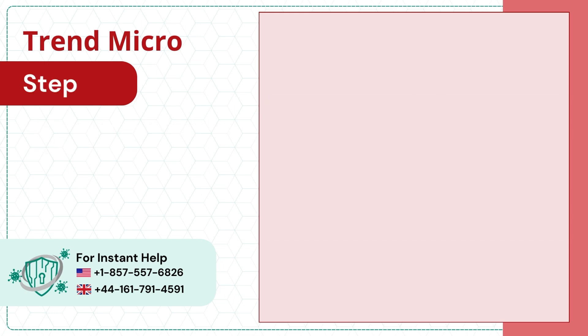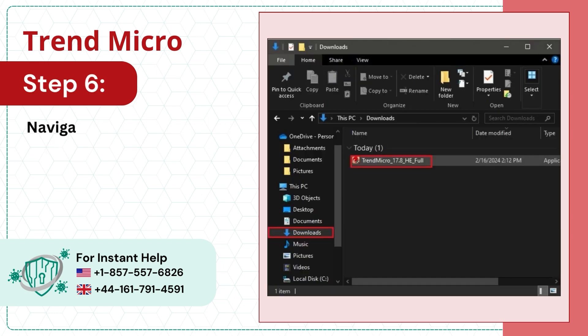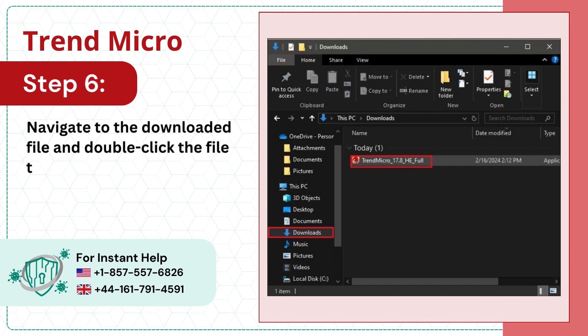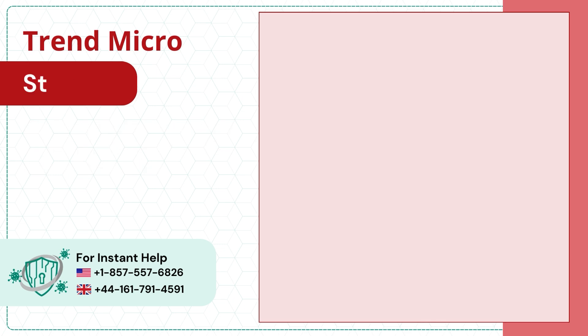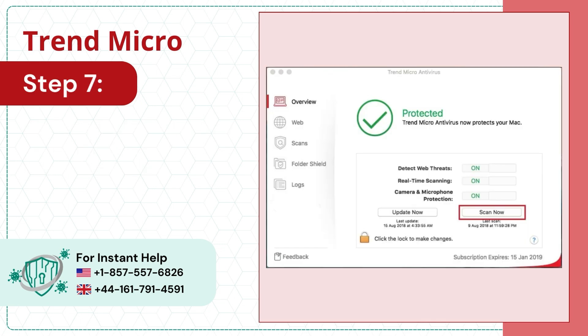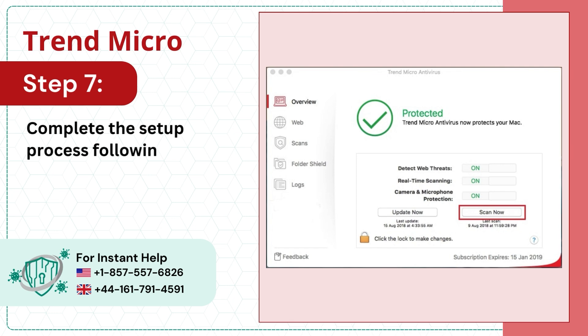Step 6: Navigate to the Downloaded File and double-click the file to run the installer. Step 7: Complete the Setup Process following the On-Screen Prompts.